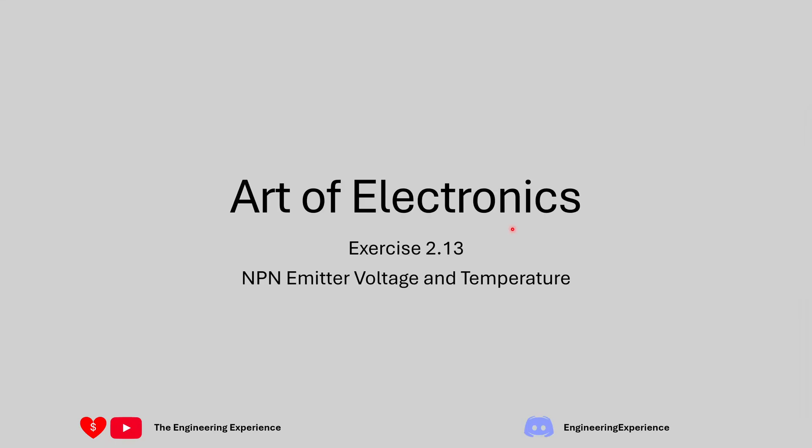Hello everyone and welcome back to the channel. Today we're going through exercise 2.13 from the Art of Electronics and for this exercise we need to go through a NPN emitter stage with a grounded emitter. We're looking at the temperature effects for this amplifier circuit so let's get started.